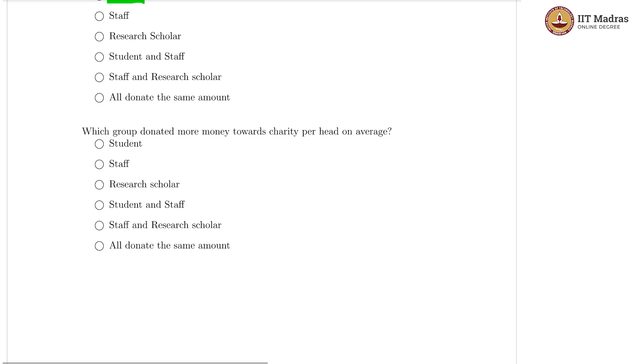And then the next question is, which group donated more money towards charity per head on average? That would be the staff as we had seen. 340 is the maximum that has shown up in the means.